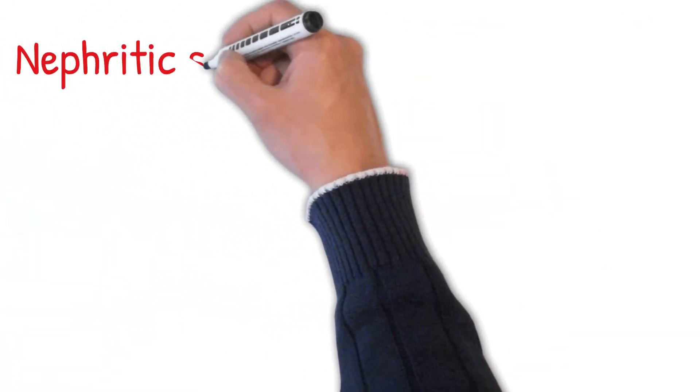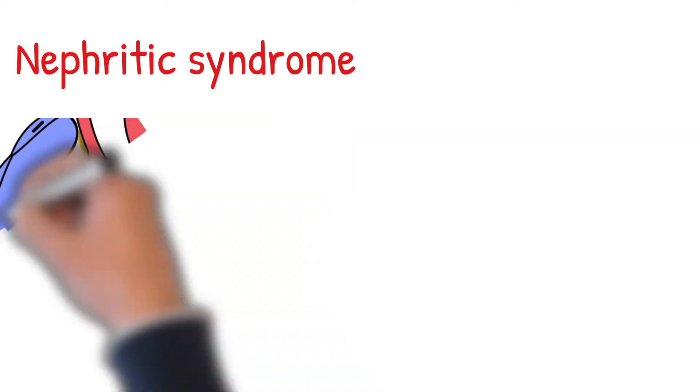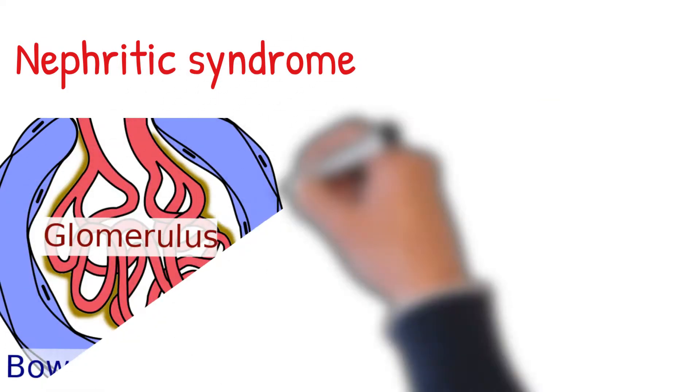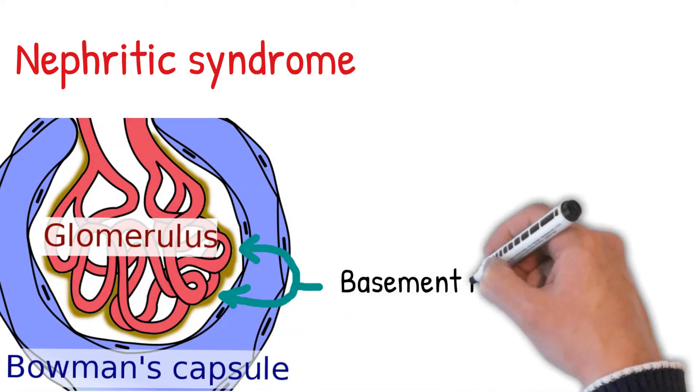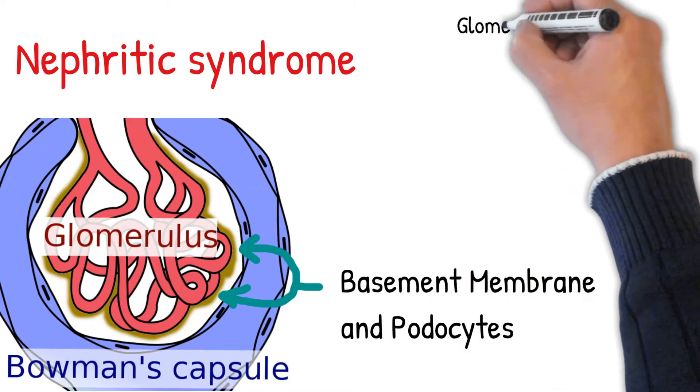Nephritic syndrome is characterized by inflammation and thinning of the glomerular basement membrane and the occurrence of small pores in the podocytes of the glomerulus. Glomerular injury is primarily due to neutrophils.